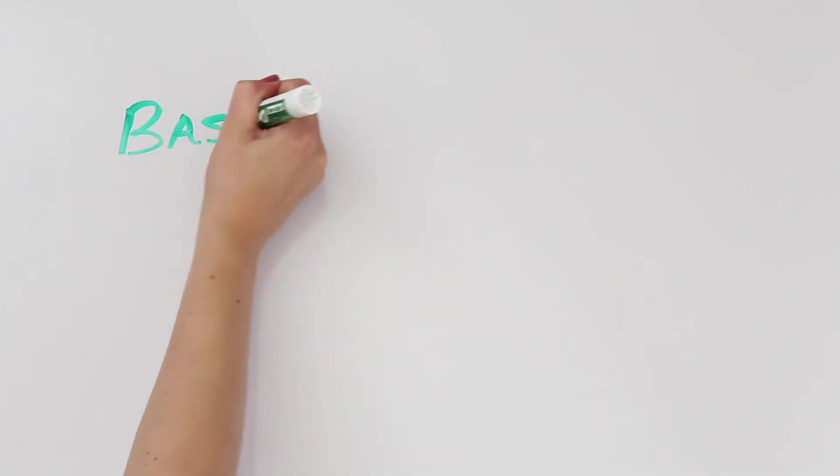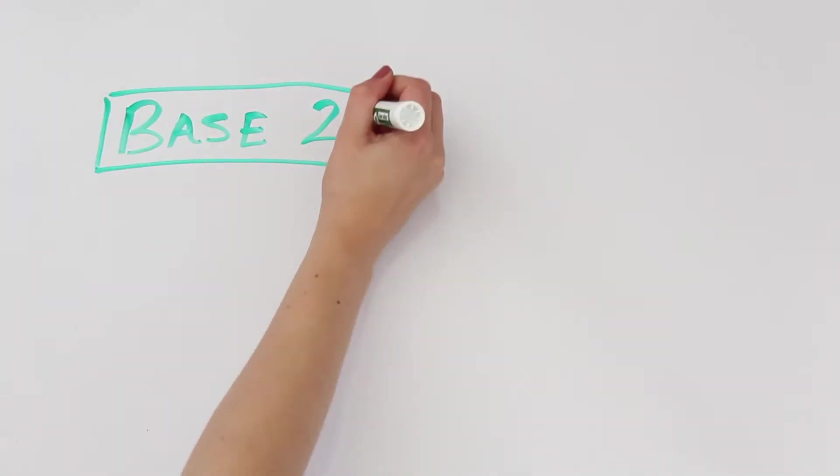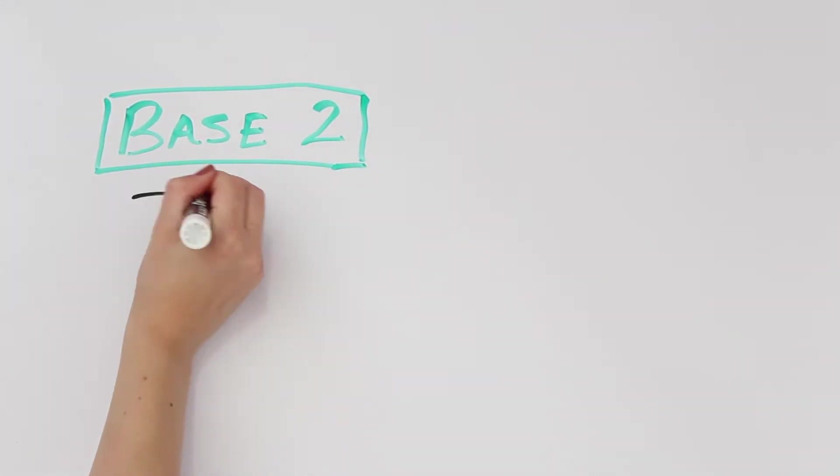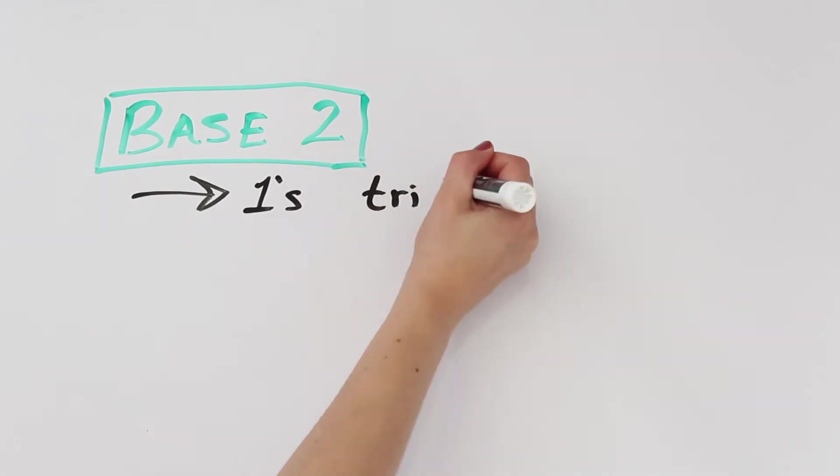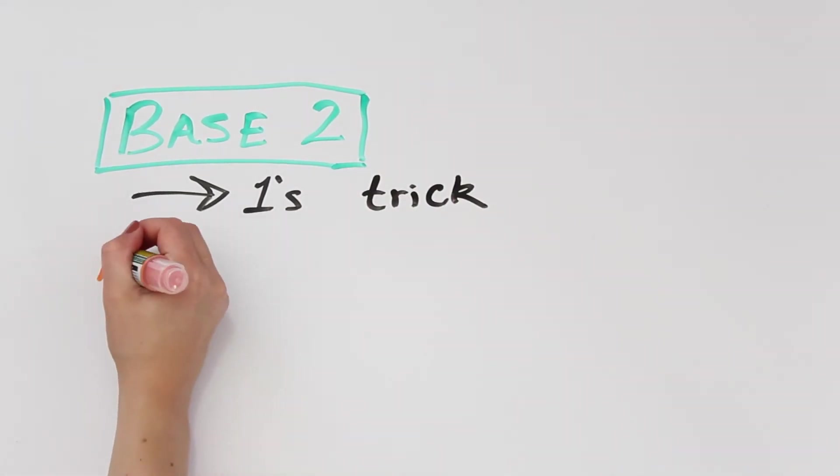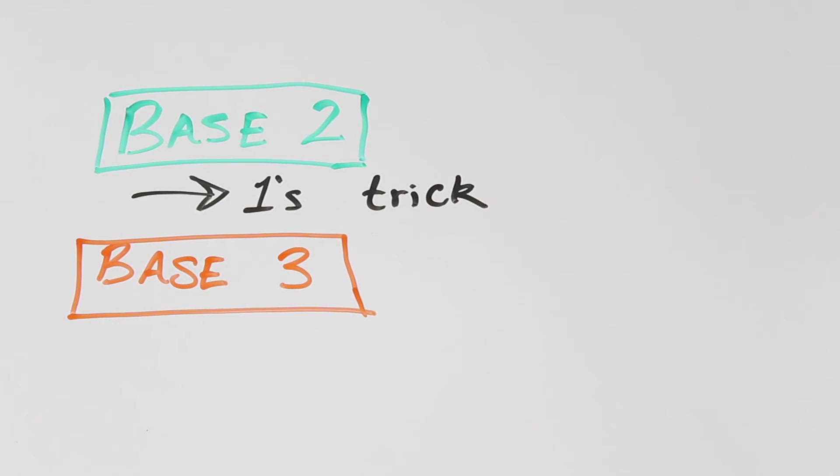If we want to talk about divisibility tricks, it makes sense to start with base 3. In base 2, there should be a 1's divisibility trick. But every number is divisible by 1, so that doesn't really matter. In base 3, there should be a 2's divisibility trick. Let's see if that works.